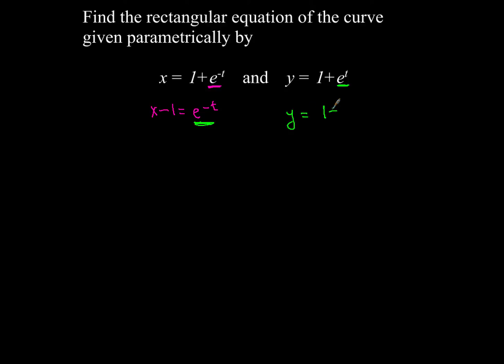We're going to write down y equals 1 plus, now e to the t we're going to represent that a little bit differently here. So this 1 over e to the negative t, that's going to be the key to unlocking this. From here what we're going to do is simply make a substitution. So e to the negative t, we just figured out what that was, that's just x minus 1.